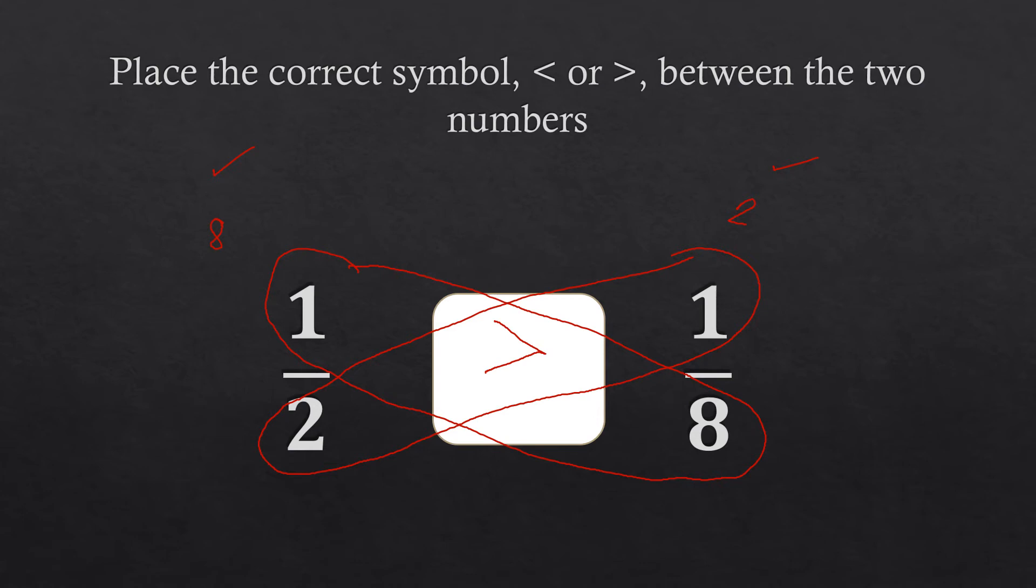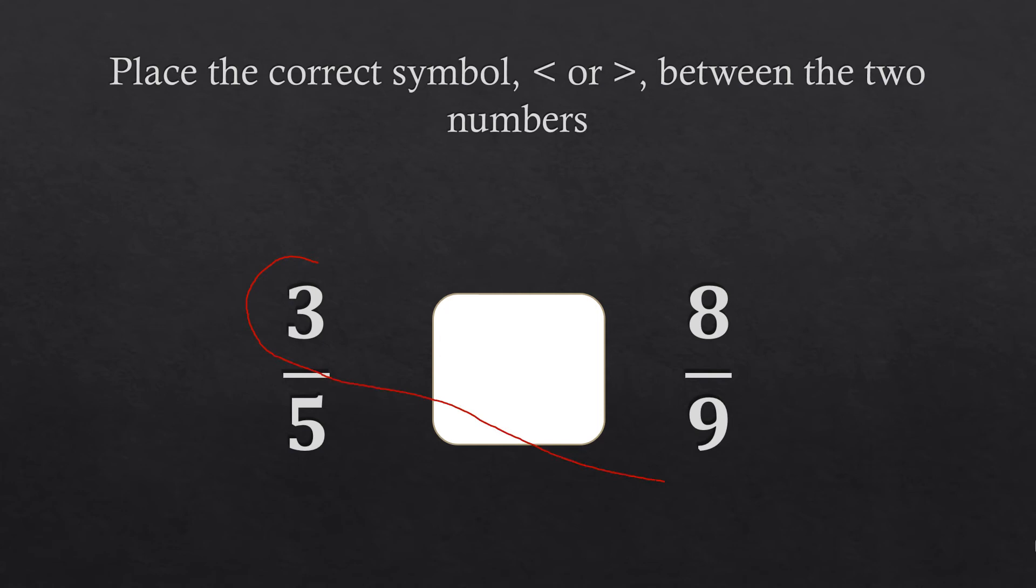So let's go for the next one. We have three fifths and eight ninths here. So again, if you try to compare that one, you are going to draw a butterfly on that, and then of course this is another wing. And you are to multiply the numbers on the same wing. So we have here three and nine, that's 27, and then five and eight, that's 40. So comparing the two, we know that this is bigger as compared to that one.